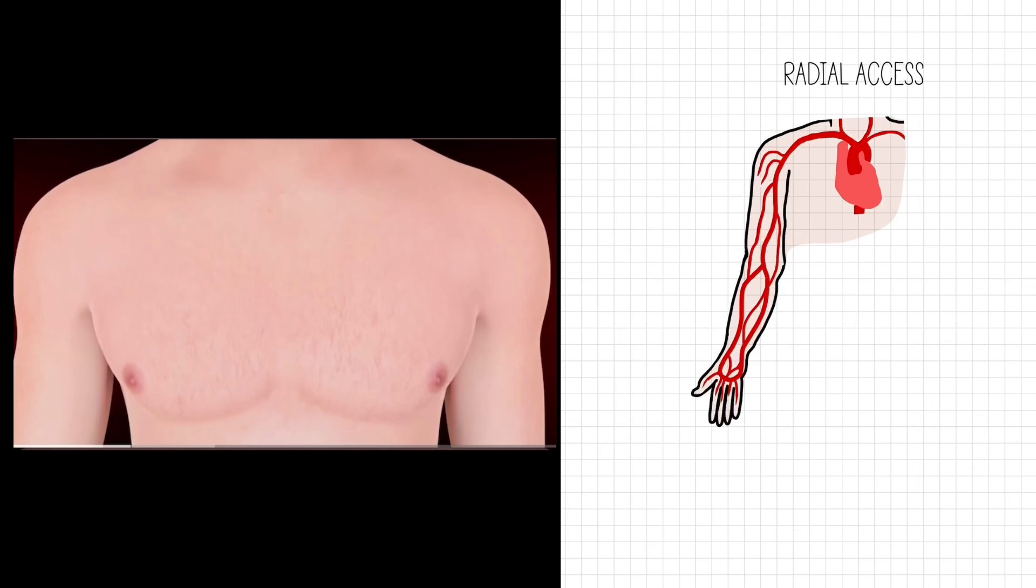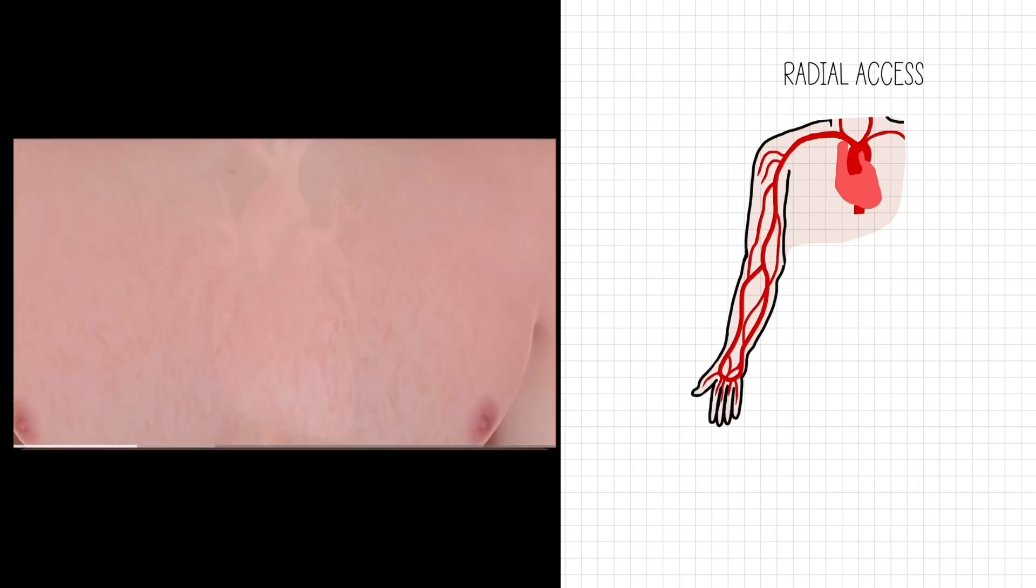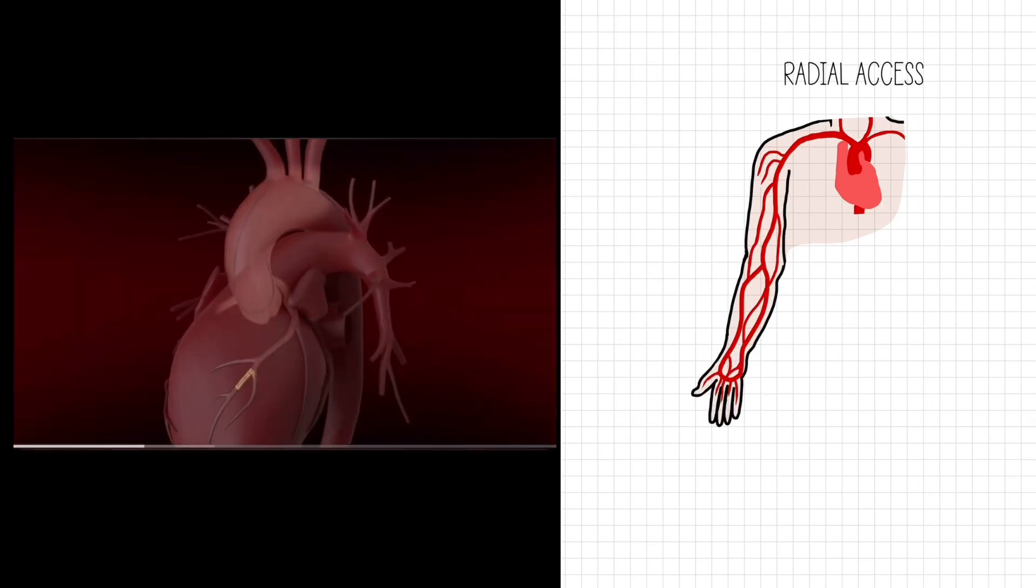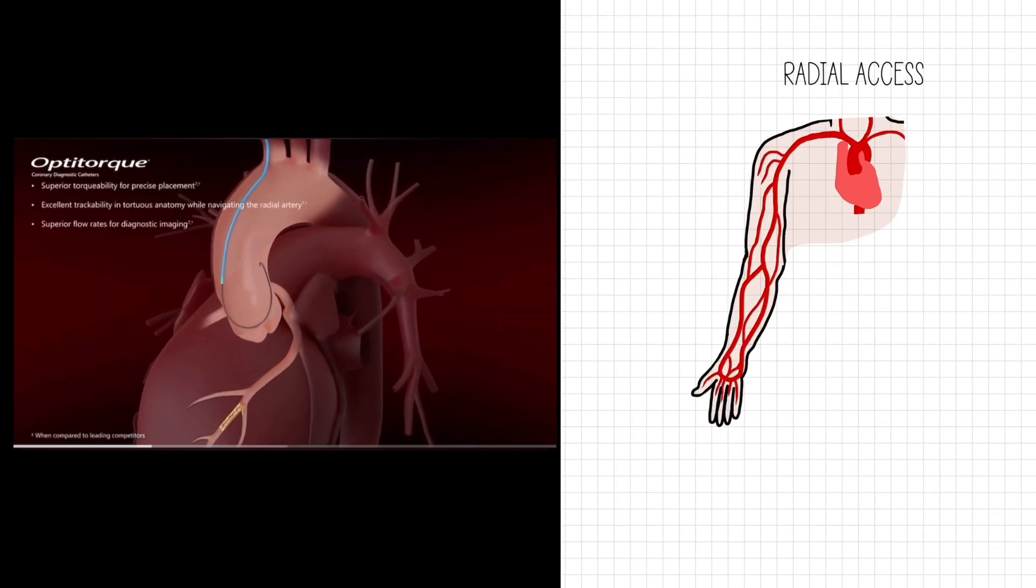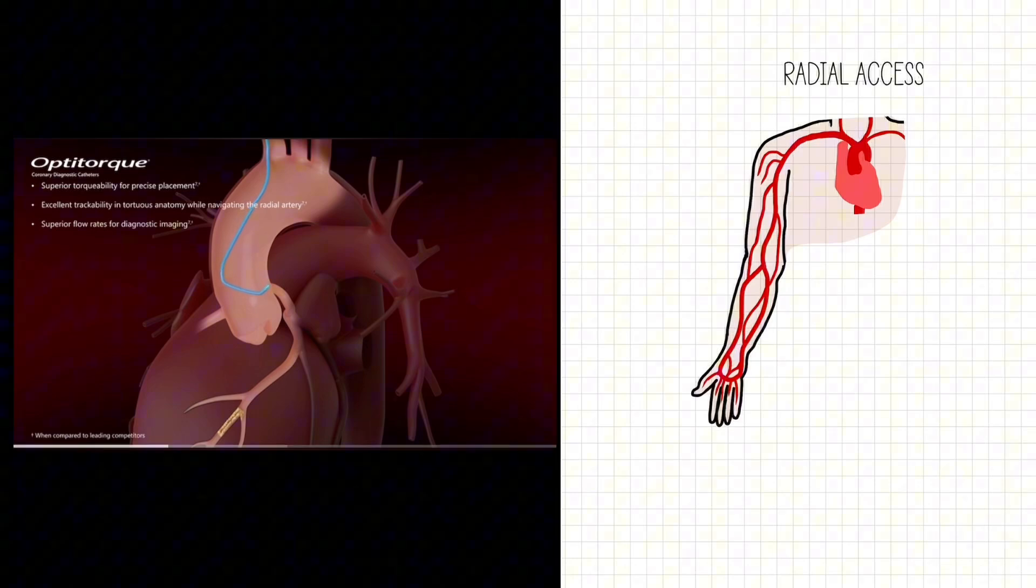A left heart cath means they were going to get their coronary arteries assessed because they have coronary artery disease or chest pain, or they needed to get their aortic valve assessed because they have aortic stenosis or are being worked up for it, or even mitral regurg.